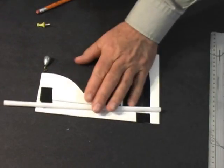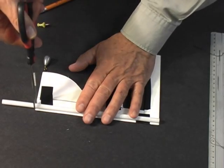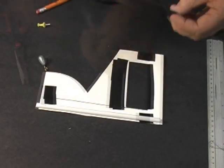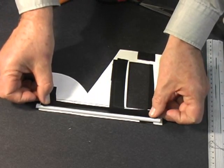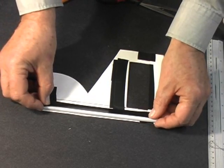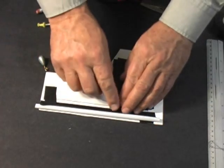Next cut a large straw to the same length as the inclinometer. Tape it along the top as shown. Align it carefully with the top edge. The straw is used to sight objects with and its alignment is important.